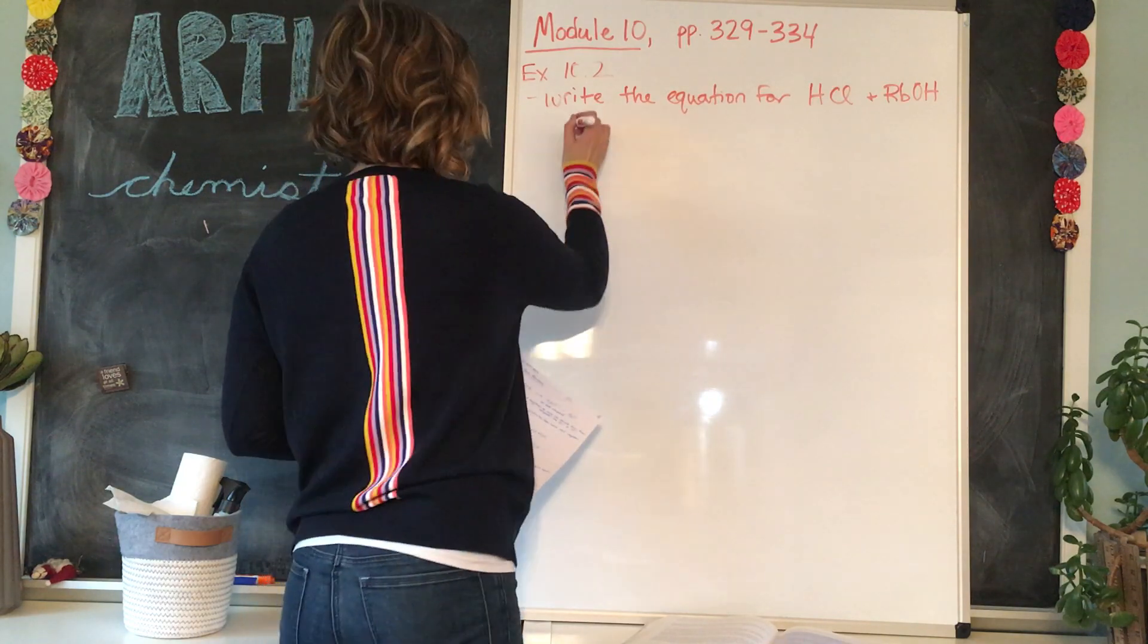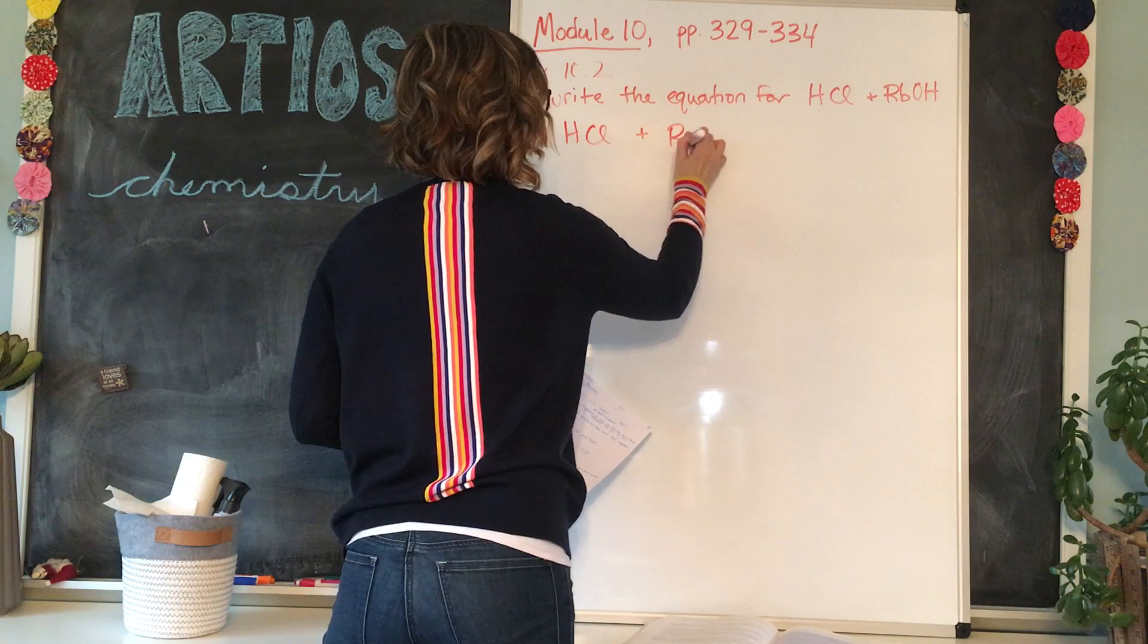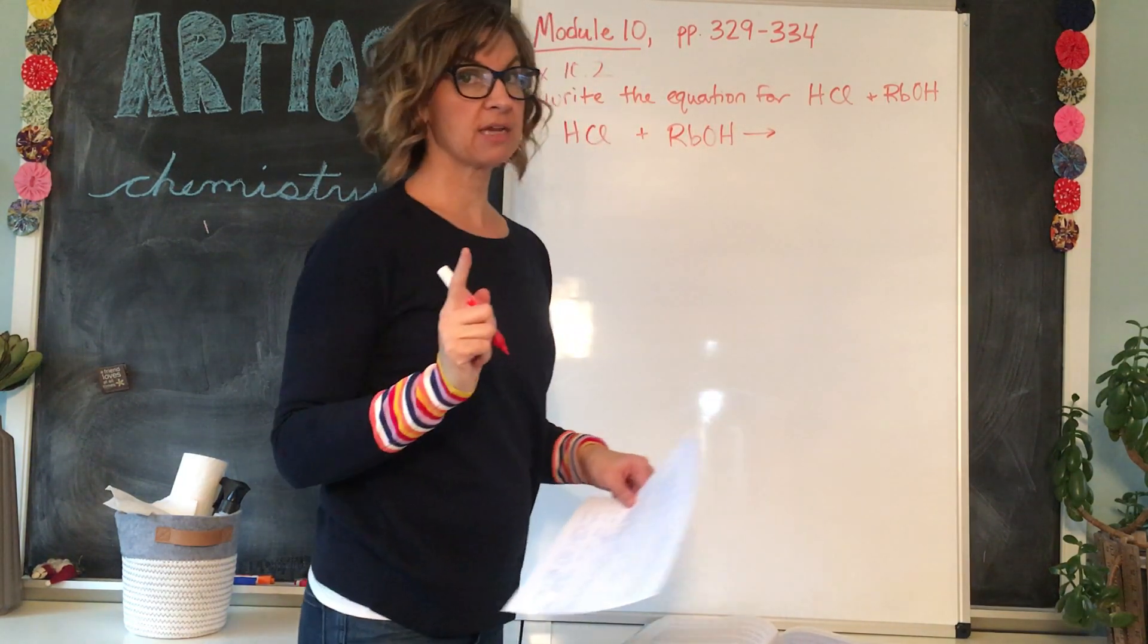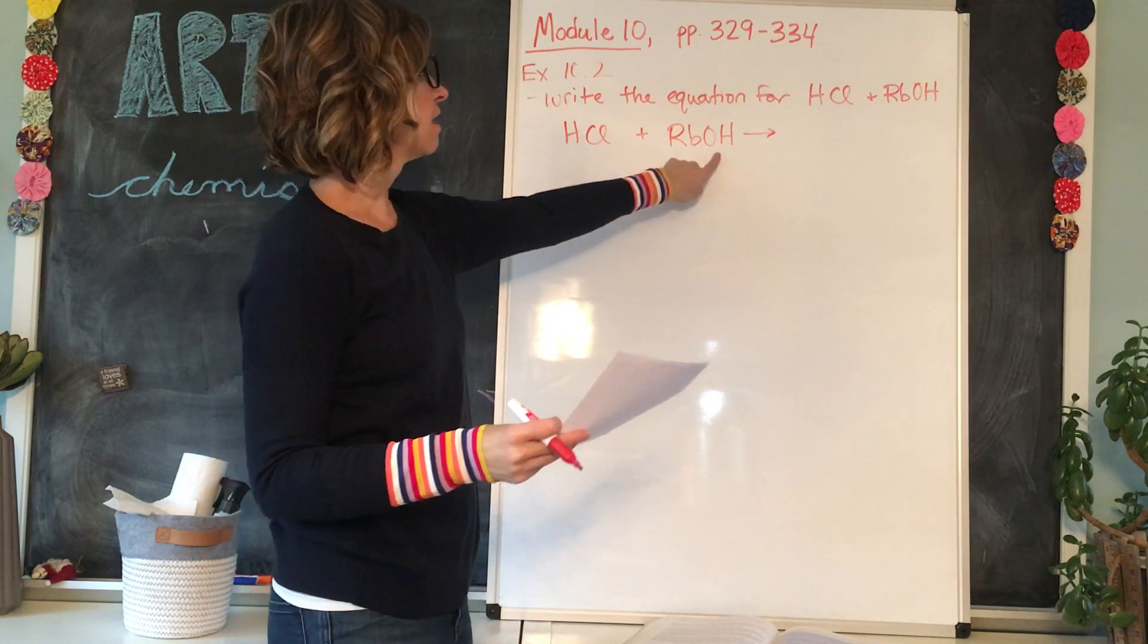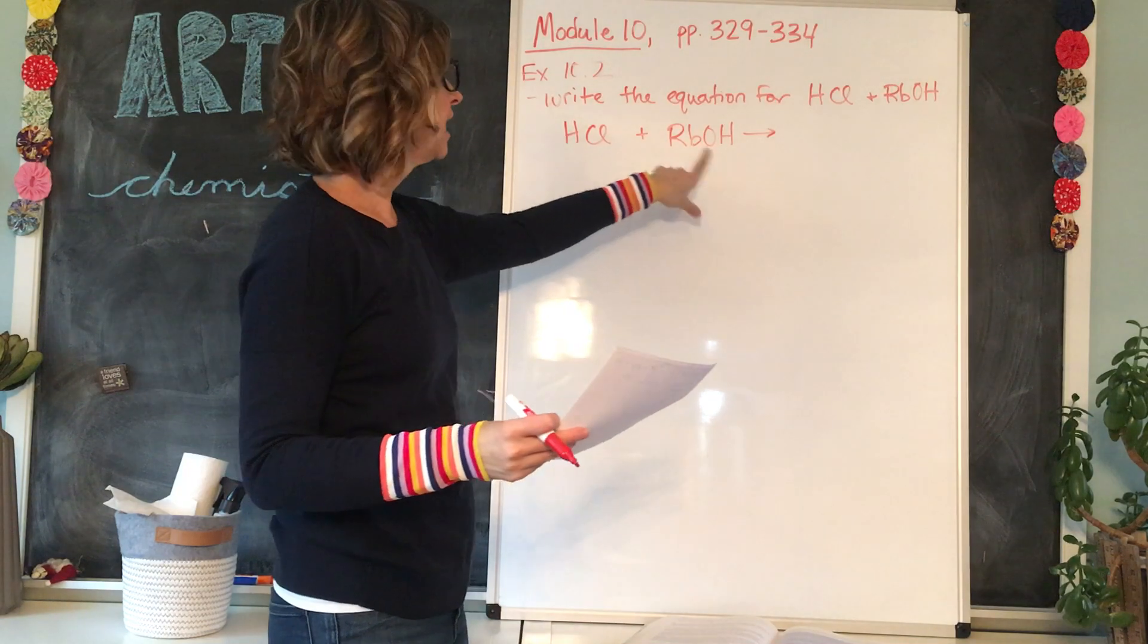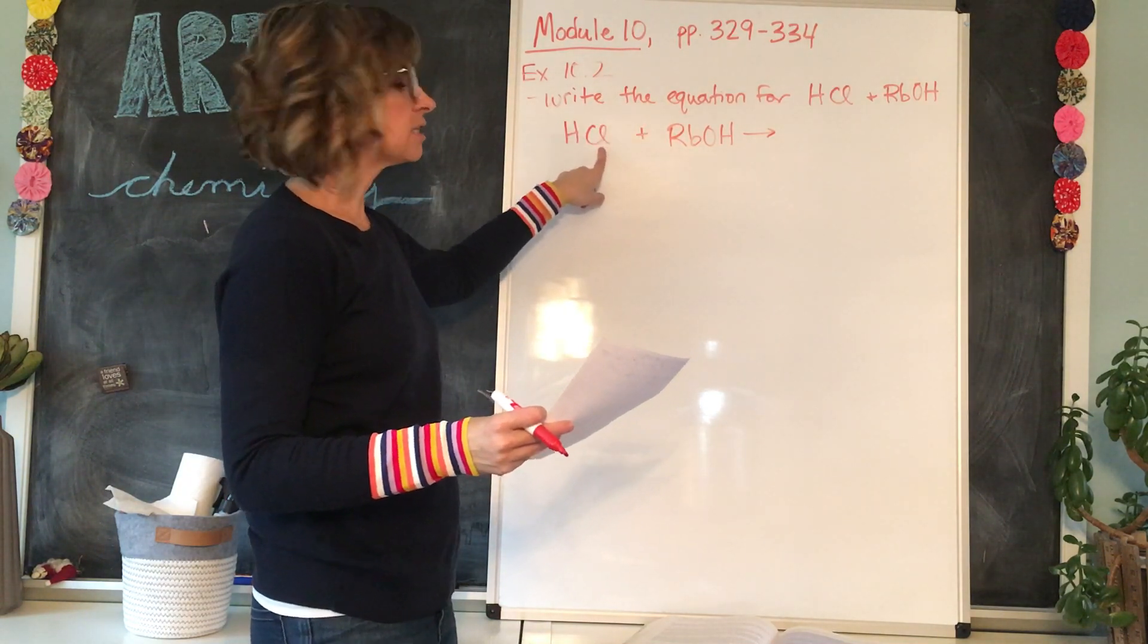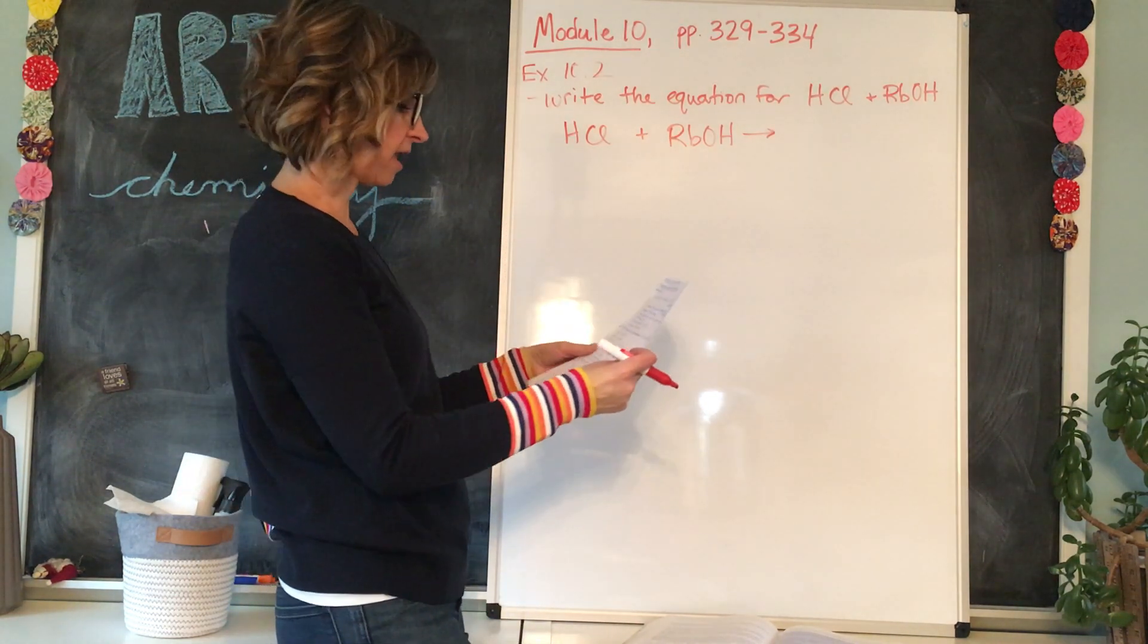Alright. So we've got HCl plus RbOH yield. Now this is another pretty simple one. So I can kind of visualize in my head that the H is going to come off of here. The OH is going to come off of here. And I can see that the Rb is going to form the salt with the Cl. So if you can do it in your head, great. This is a simple one. Let's just do it in our head.